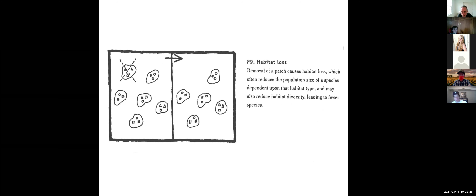When looking at clusters of patches, removal of a patch obviously causes habitat loss, which can reduce the population size of species dependent on that habitat and reduce habitat diversity. In a cluster of patches, losing one patch might not seem like a big deal, but depending on which species live in that particular patch, it can lead to an entire species disappearing from the cluster.